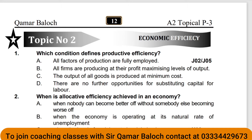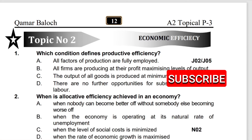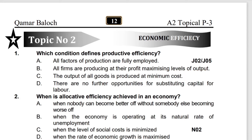Starting with Question 1: which condition defines productive efficiency? Productive efficiency is part of overall economic efficiency. Economic efficiency is divided into two parts: productive efficiency and allocative efficiency. Productive efficiency is achieved when we are producing along the PPC curve, or when the output of all goods is produced at minimum average cost.